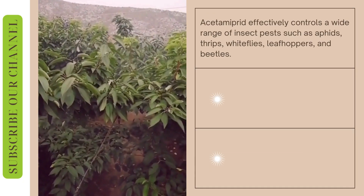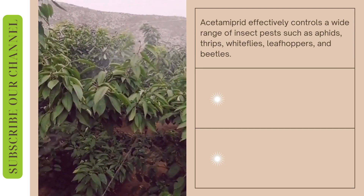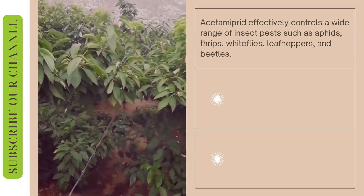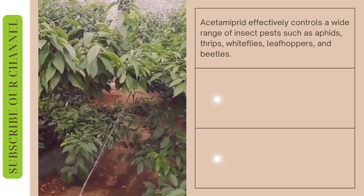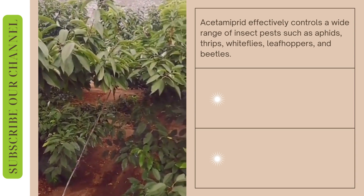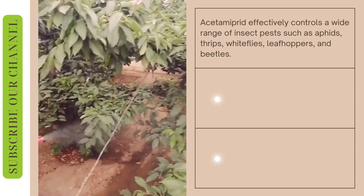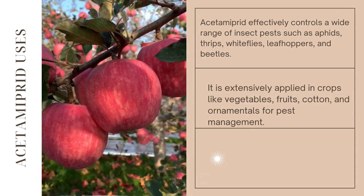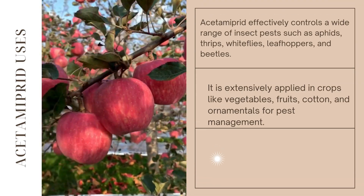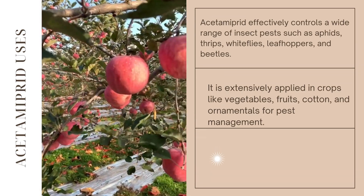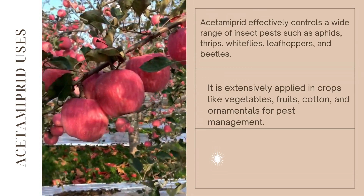This systemic action ensures that the insecticide reaches pests feeding on different plant tissues, providing comprehensive control throughout the plant. Acetamiprid effectively controls a wide range of insect pests such as aphids, thrips, whiteflies, leafhoppers, and beetles. It is extensively applied in crops like vegetables, fruits, cotton, and ornamentals for pest management.